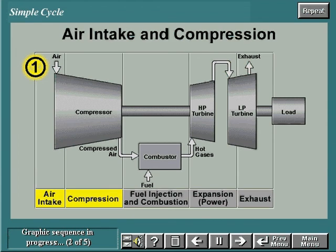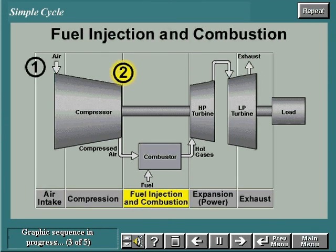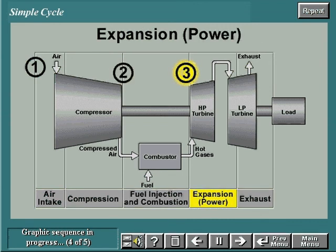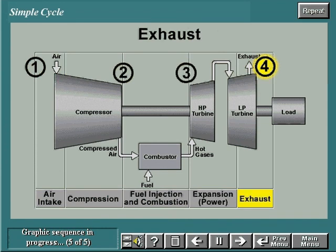At point one in this diagram of the simple gas turbine cycle, air enters the compressor and is compressed to a higher pressure. The high-pressure compressor discharge air at point two is mixed with fuel in the combustor. The combustion gases at point three enter the turbine where they expand and cool, performing work on the rotating turbine shaft. The combustion gases are then expanded to atmospheric pressure and exhausted to the atmosphere at point four.